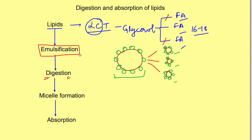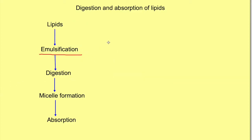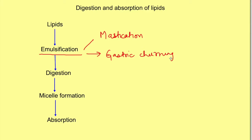Emulsification occurs by mechanical processes: mastication when the bolus is in the mouth breaks down food into smaller particles. Then gastric churning movements and intestinal movements also lead to breaking down large particles into smaller ones. However, like oil in water, even separate droplets will soon come together, so we need to ensure these smaller particles remain separate.